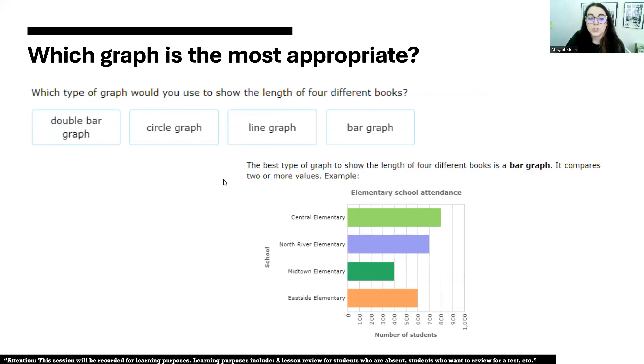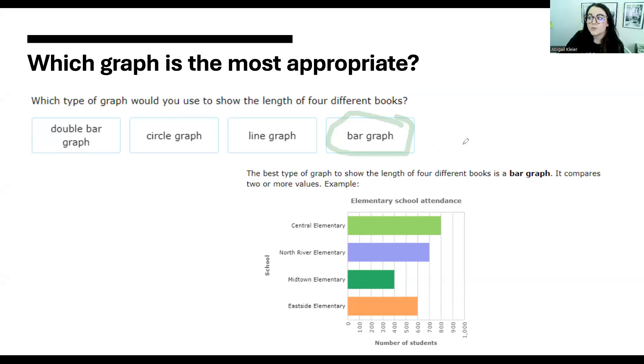Here's another scenario: which type of graph would you choose to show the length of four different books? In this scenario, we would just want to choose a classic bar graph. The bar graph is one that we use when this scenario doesn't fit with anything else. We will at the end review all the different types of graphs and when it's most appropriate to use them. The bar graph is always the safest bet. It's the option that we would pick when it does not fit into any of the other given graphs.